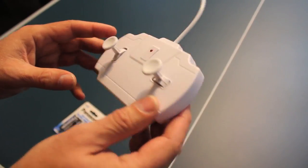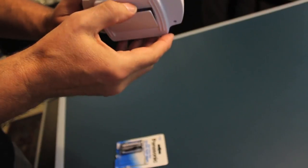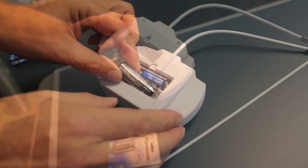Using a small Phillips-head screwdriver, remove the back of the controller. Insert two AA batteries and reattach the back of the controller.